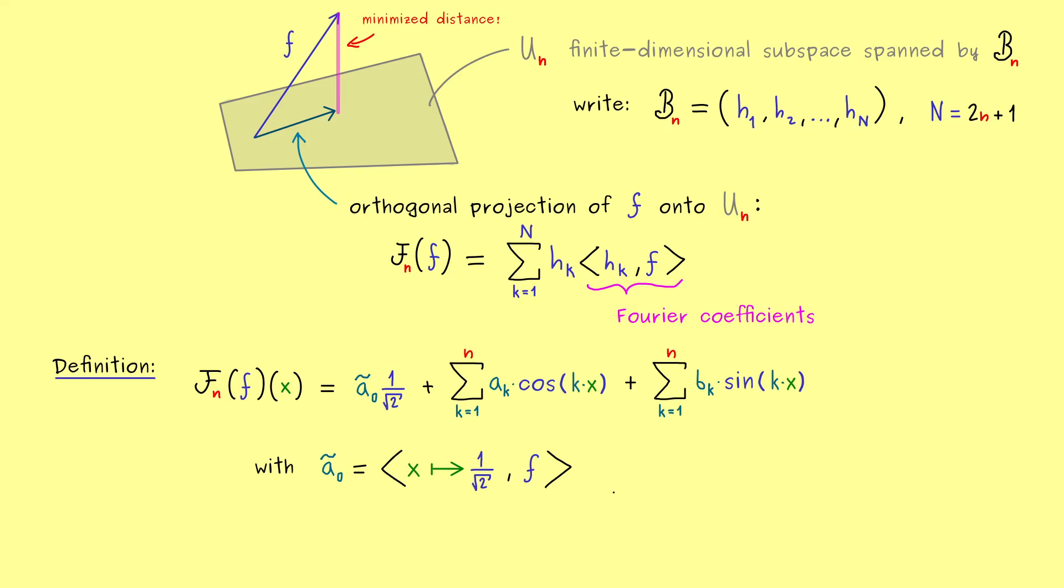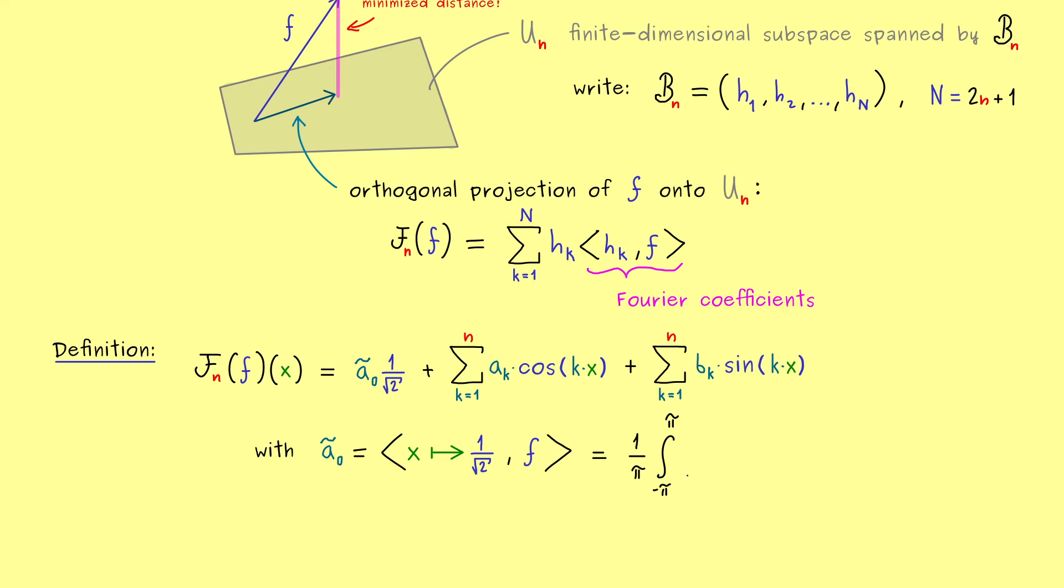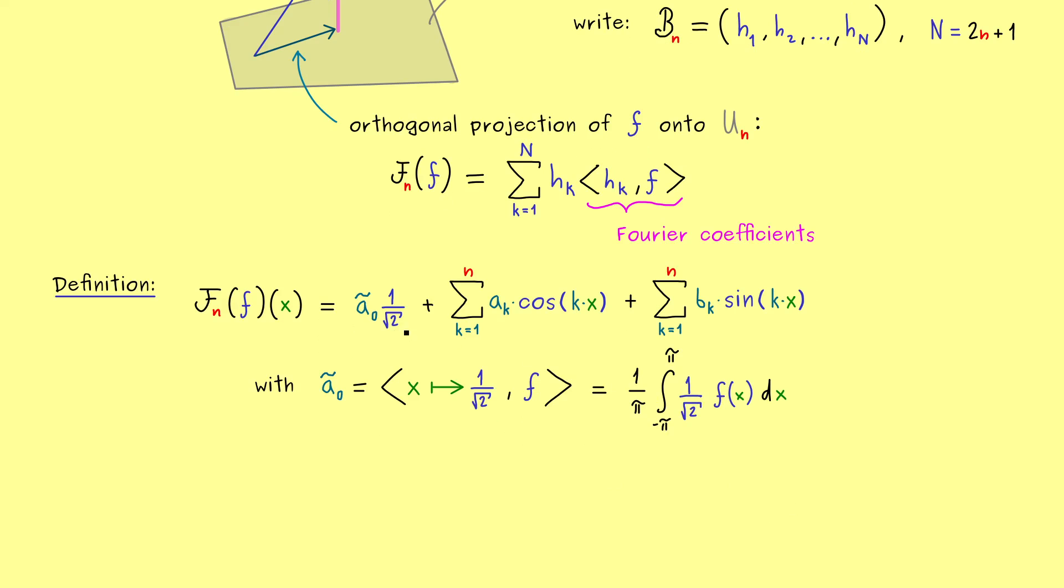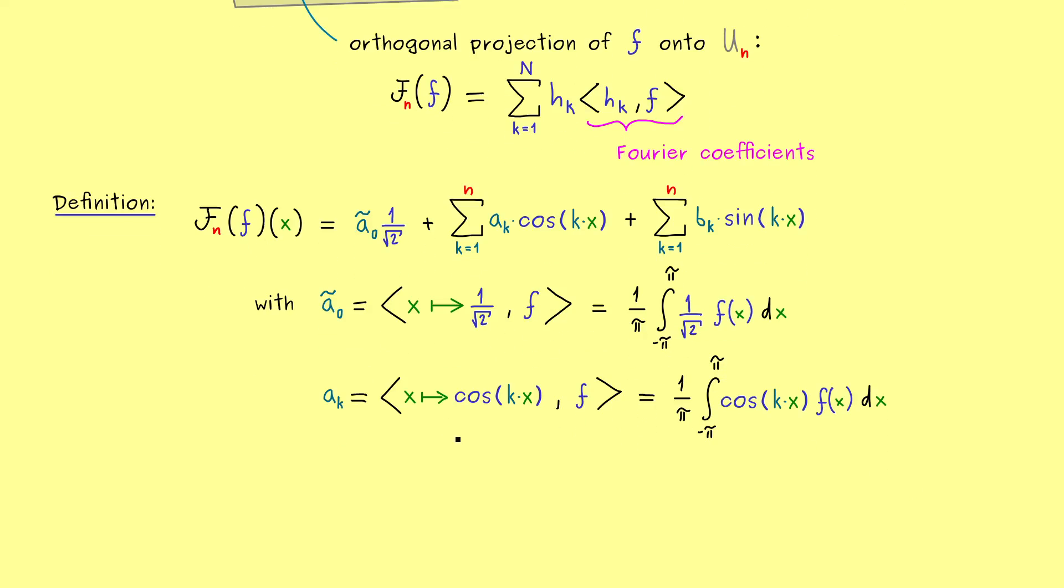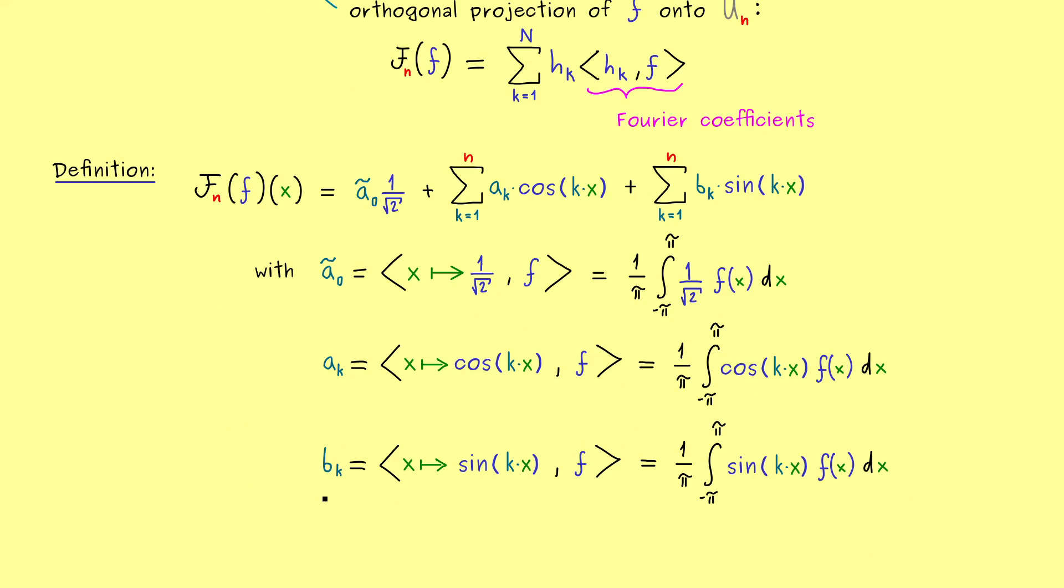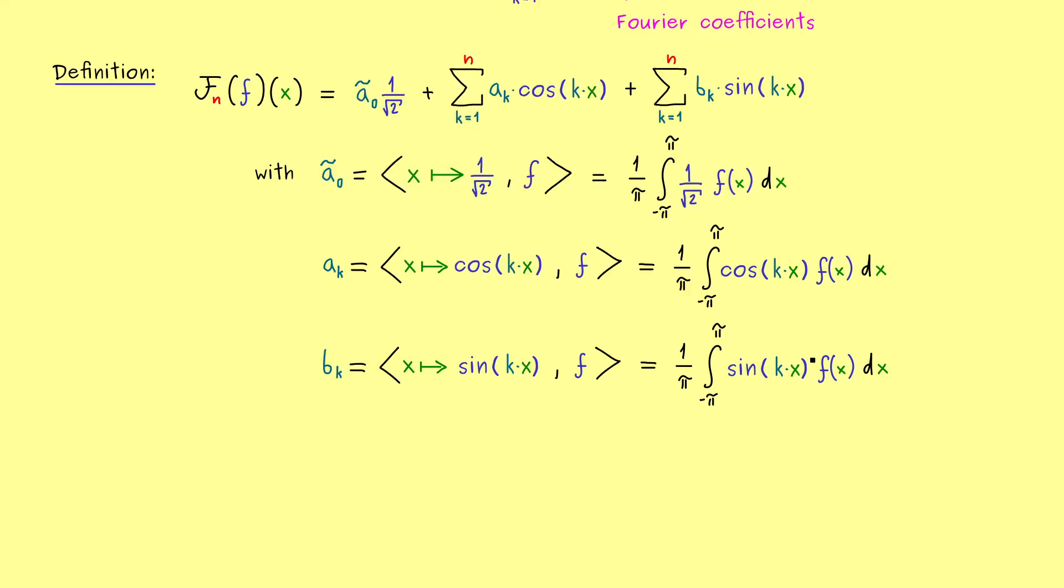Hence the first one here is just given by the inner product constant function with f. Which is by definition 1 divided by π times the integral. And inside we have the constant function times f of x. So not so complicated. And in the end you should see that the two square roots here multiply to one half. And now we can quickly do the other coefficients. Let's start with the cosine functions. There we also have 1 over π times the integral of the cosine function times f of x. So all these integrals you have to solve to get all the coefficients ak. And now very easily we can do the same thing with the sine function. So we have this integral for the bk coefficients. And that's it. This is what you should remember.